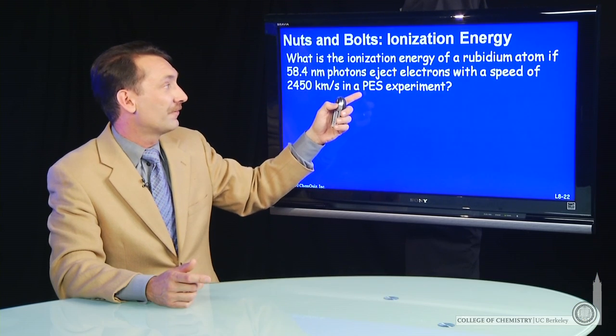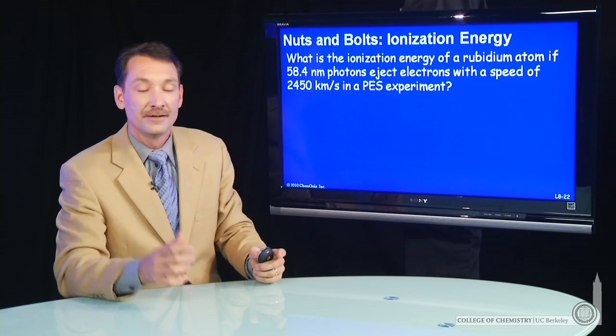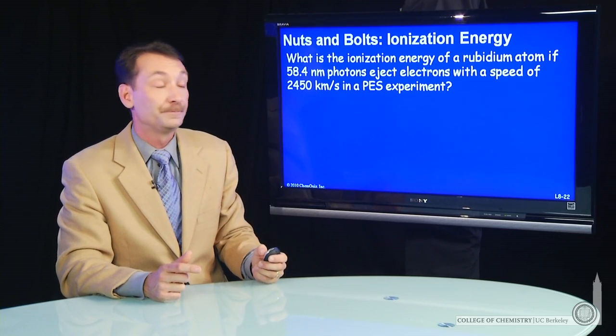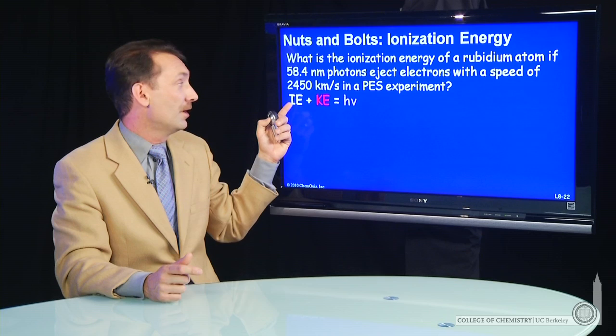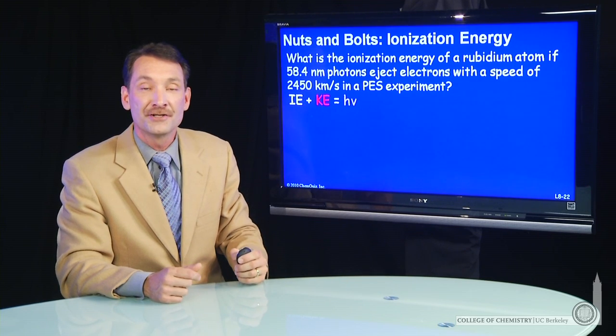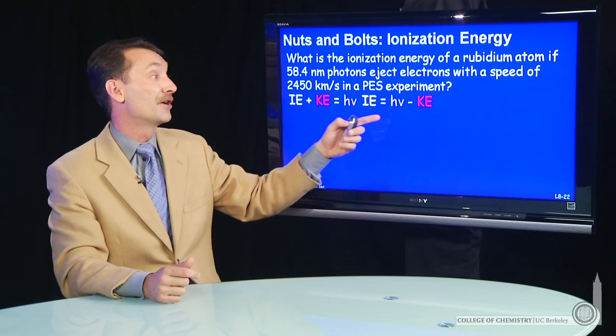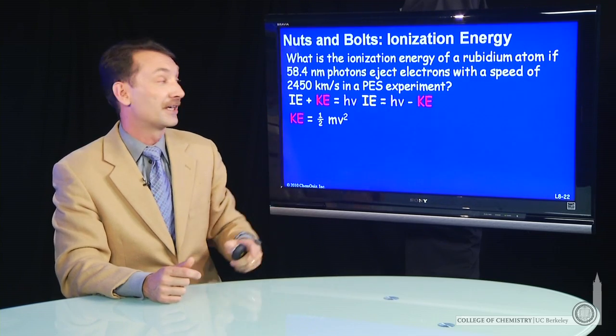Now, this is called a photoelectron spectroscopy experiment. Ultraviolet radiation, measure the kinetic energy of electrons emitted. So I know the kinetic energy and the ionization energy add to give the photon energy. So I can calculate the ionization energy from the photon energy and the kinetic energy.